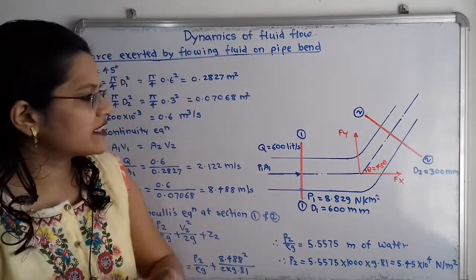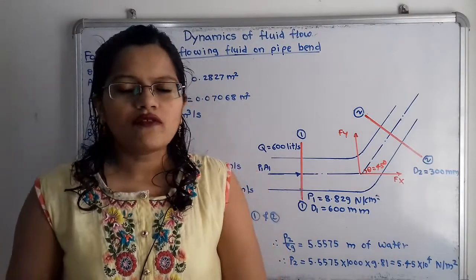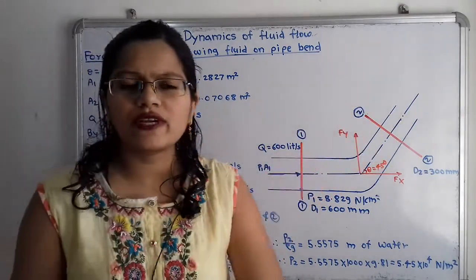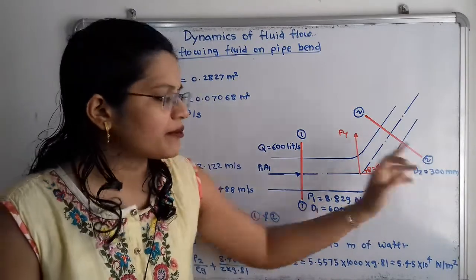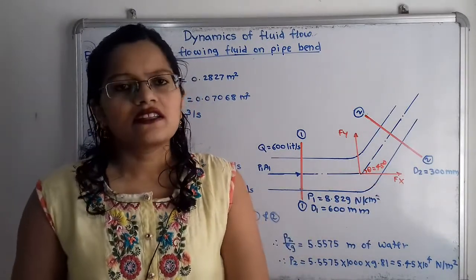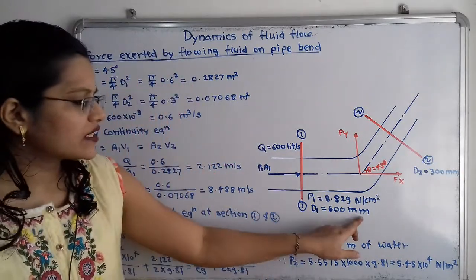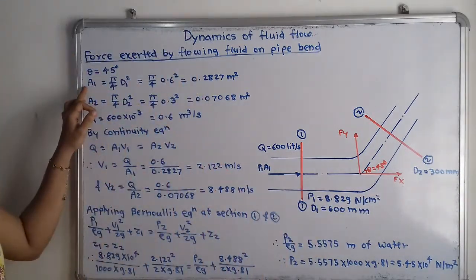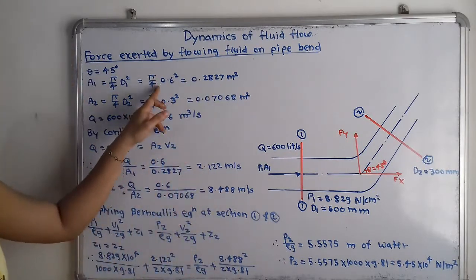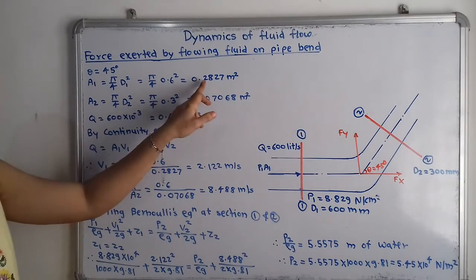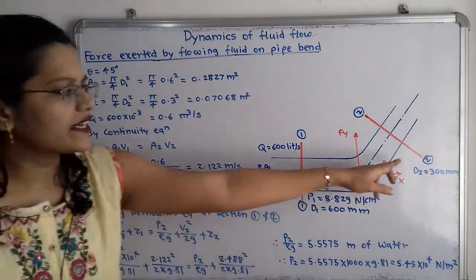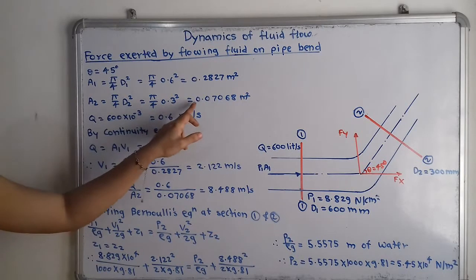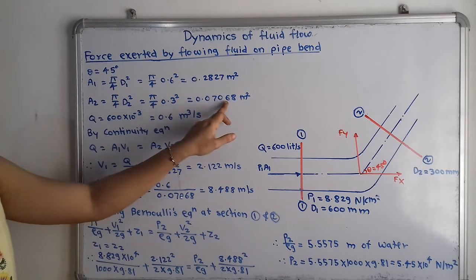We will find out the pressure intensity at section 2-2. First we find the cross-sectional areas. Converting to standard units: d1 = 0.6 m and d2 = 0.3 m. Area A1 = (π/4)d1² and A2 = (π/4)d2² = (π/4)(0.3)² = 0.07068 m².